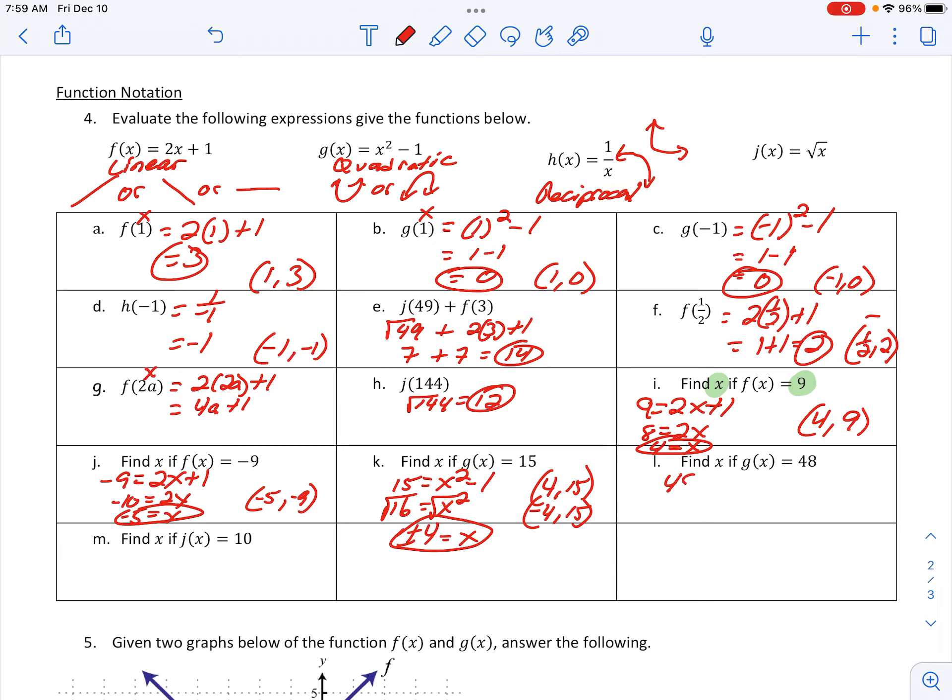Same thing's happening on the next one. 48 equals x squared minus 1. And we get x squared equals 49 and two solutions. So x could be positive 7 or x could be negative 7 in order to get a 48. With the last one, j of x is 10. As the square root gets rid of the squared, the squared can get rid of the square root. It is the inverse of one another. So I'm going to square both sides, and I get x to be 100.